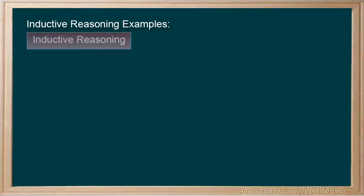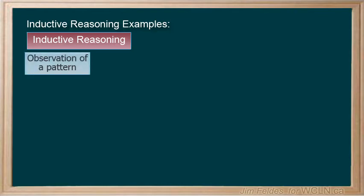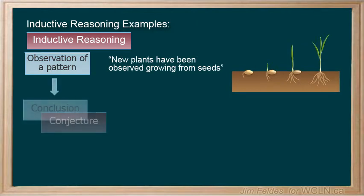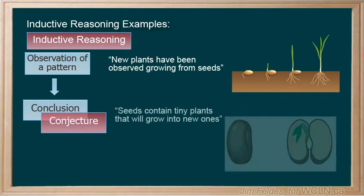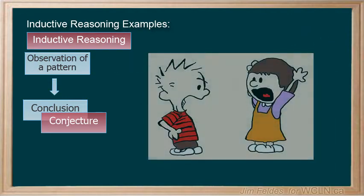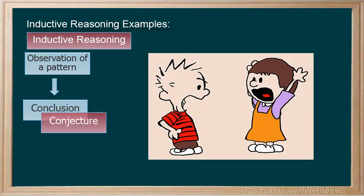Let's consider some examples to put this together, starting with our seed connection. Our observation of a pattern might be, new plants have been observed growing from seeds. And our conjecture could be, seeds contain tiny plants that will grow into new ones. Our conjectures often form the basis for us to present an argument. These observations show this pattern, so I have good reason for my conclusion.